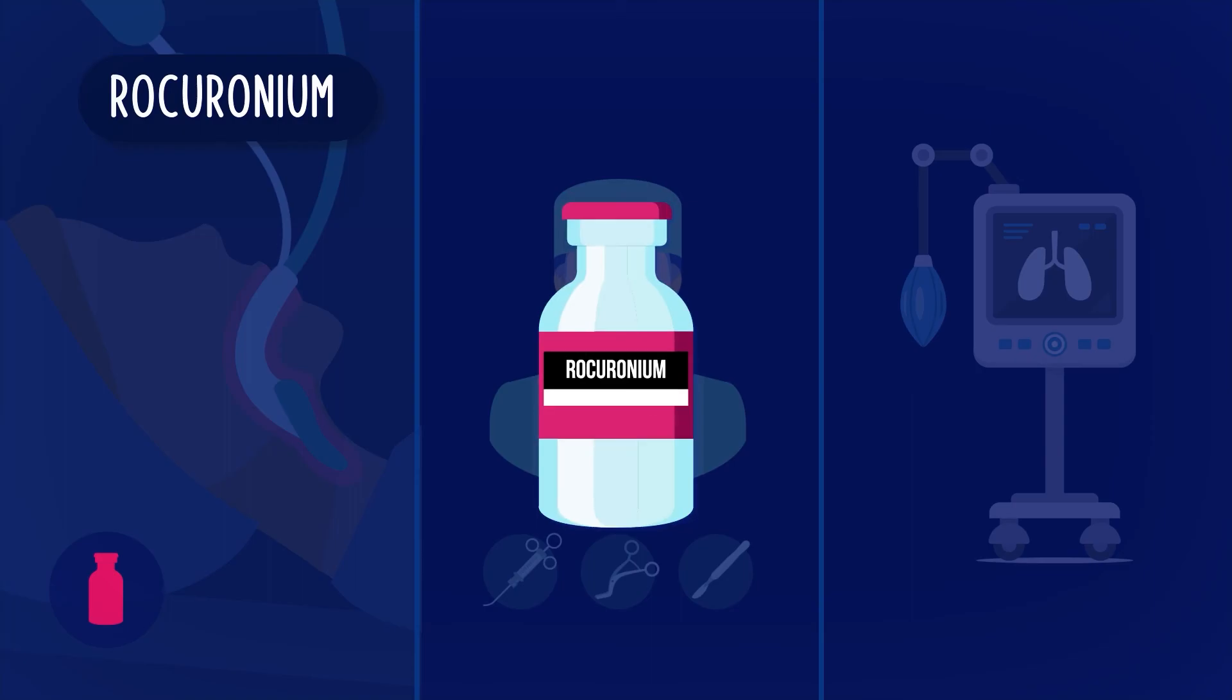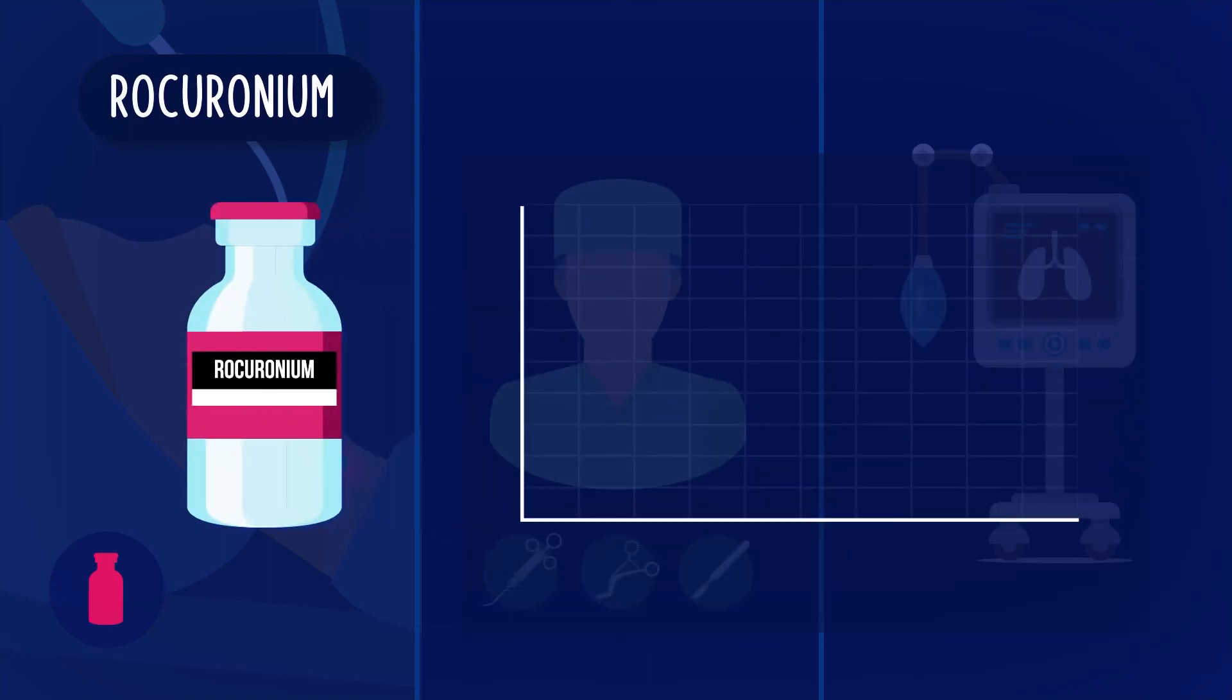An example of non-depolarizing blocking agent is rocuronium. Rocuronium is a longer acting agent where the mechanism of action is already apparent within a minute or two of intravenous administration and can continue to last between 30 to 90 minutes.